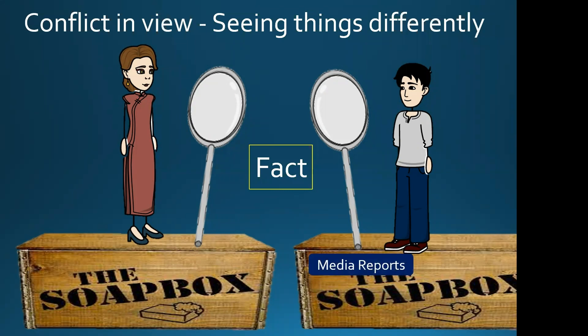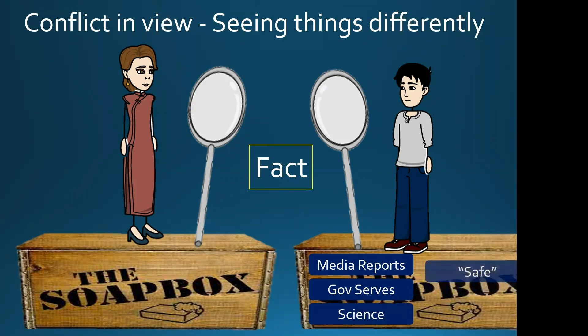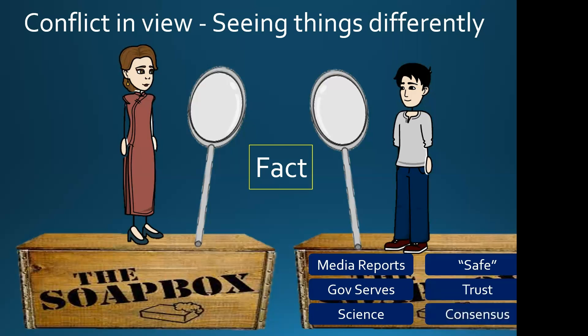If we looked into Joe's soapbox, let's say Joe believes that the media reports the truth. He thinks the government serves him. He thinks that science is solid and cannot be corrupted. He thinks if anybody says something's safe, then it must be. Trust the institutions. He thinks there's checks and balances in place, and he thinks there's a consensus. That's really a key point, because if somebody hasn't released data, how can there be a consensus? The illusion of consensus is one of the biggest drivers for people believing what they believe.